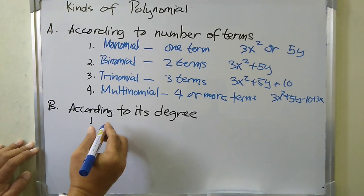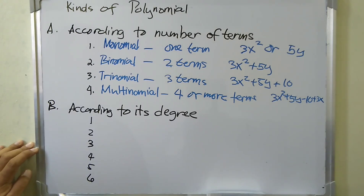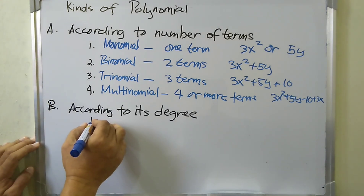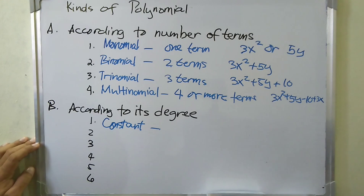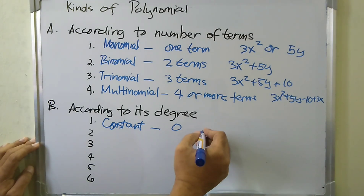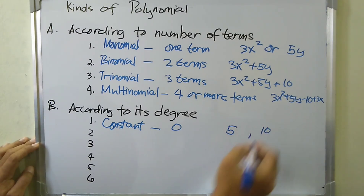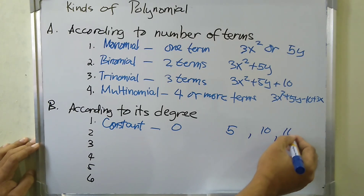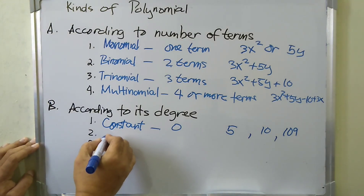Now let's discuss the kinds of polynomial according to its degree. When we say degree, we refer to the highest exponent found in the algebraic expression or polynomial. The first is constant polynomial — a polynomial of degree zero. For example, we can have 5, 10, or 100.